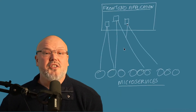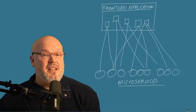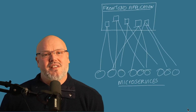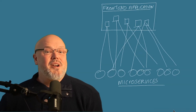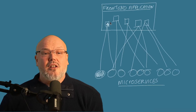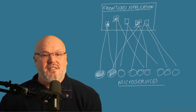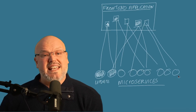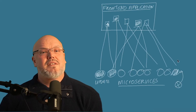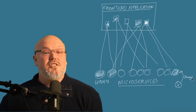In other words, you just call the API you need when you need it from within the application. And this approach is fine for simple applications, but there are downsides when it comes to more complicated applications. One of the first issues you might encounter is that the frontend has to understand a lot more about the backend and its APIs.